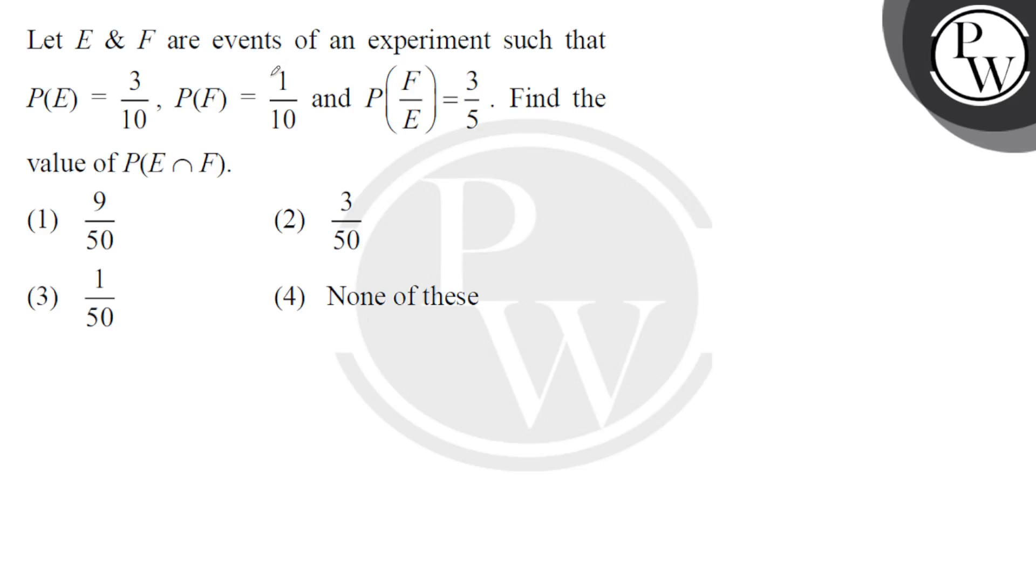Hello, here we go. E and F are events of an experiment such that P(E) = 3/10, P(F) = 1/10, and P(F|E) = 3/5. Find the value of P(E intersection F).